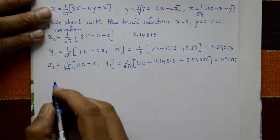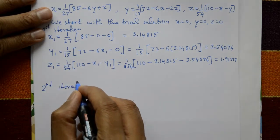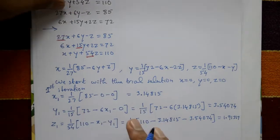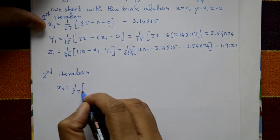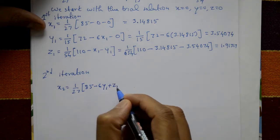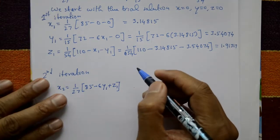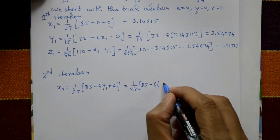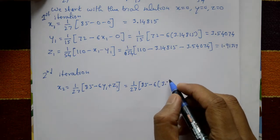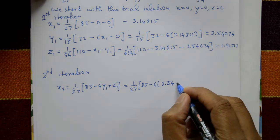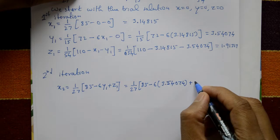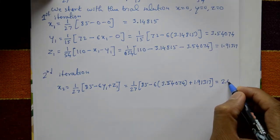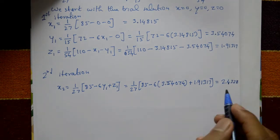Now go to the second iteration. x2 = (1/27)(85 − 6·y1 + z1) = (1/27)(85 − 6 × 3.54074 + 1.91317) = 2.43218.